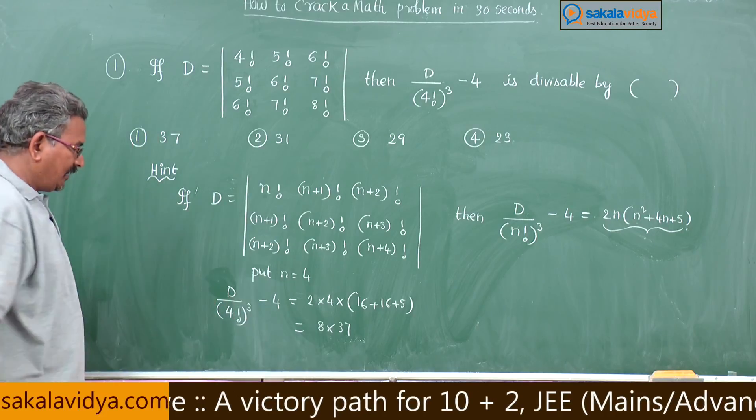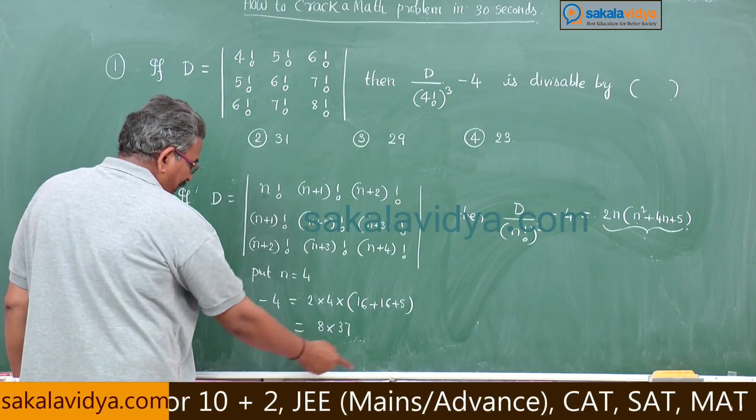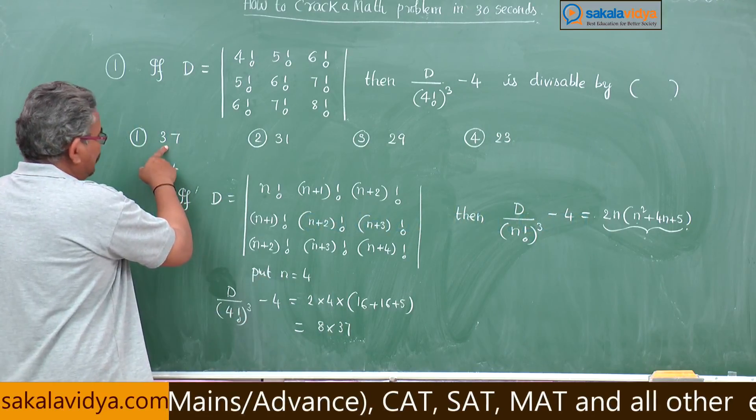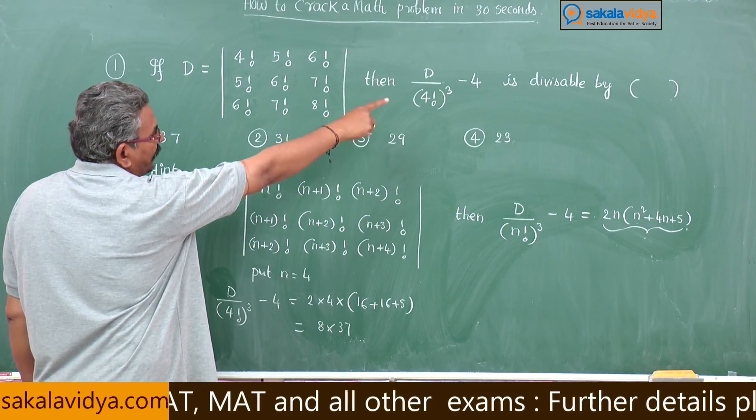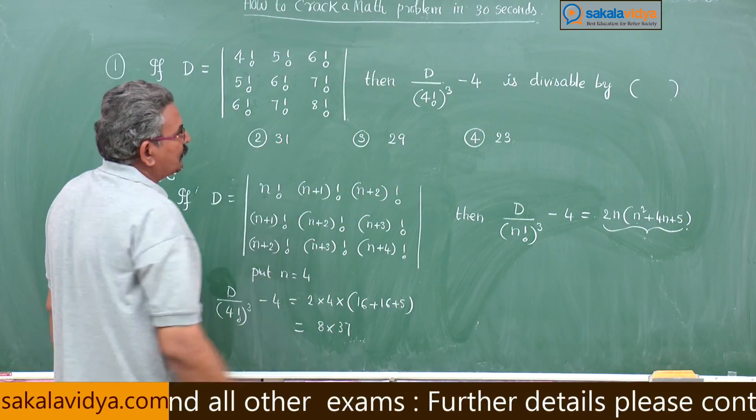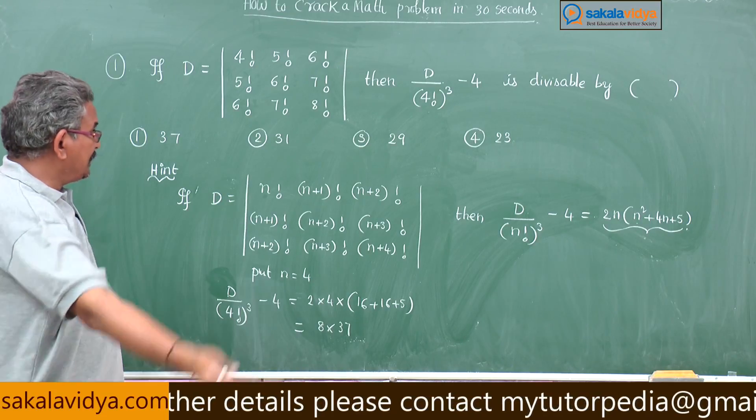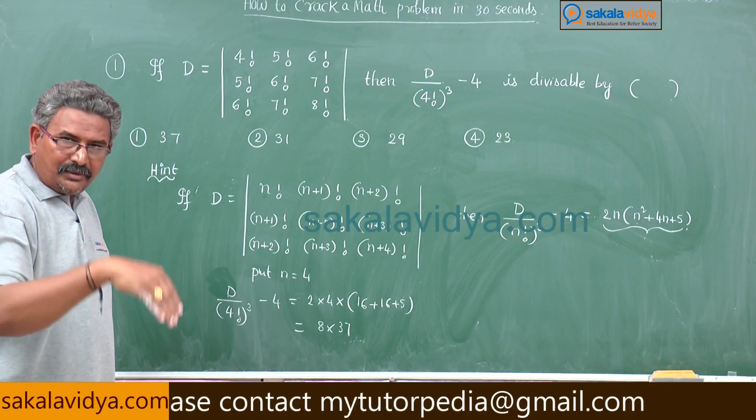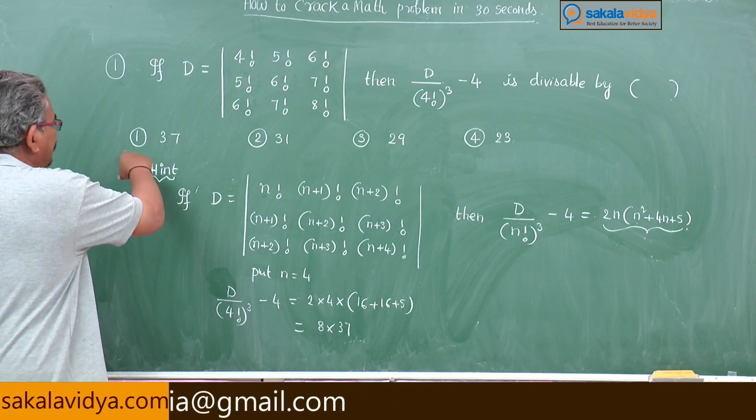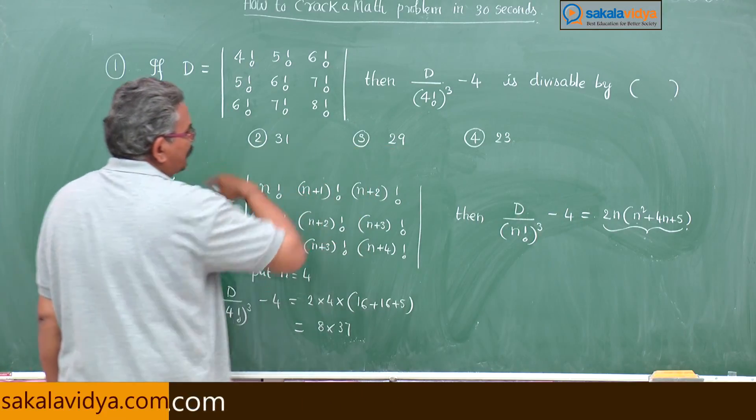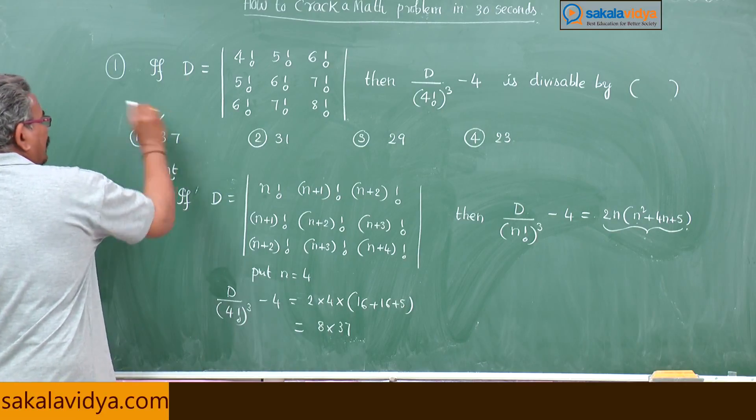Now, the factors of this one is 8 and 37, it is divisible by 37. See 37 is there. That means, now D by 4 factorial cubed minus 4 has one of the factors 37 as well as 8. That means it is divisible by 8, it is also divisible by 2, it is also divisible by 4, it is also divisible by 37. See, if you check of the 4 options 37 will be the right option. First one is the right option. Thank you.